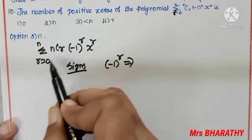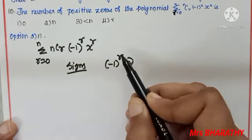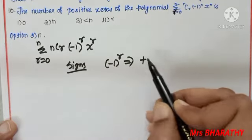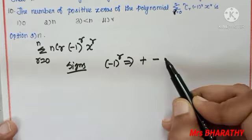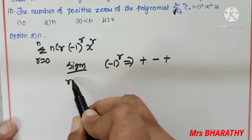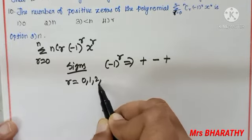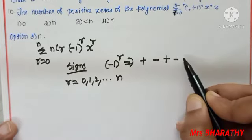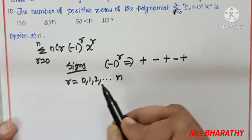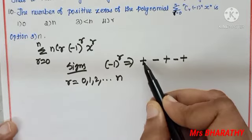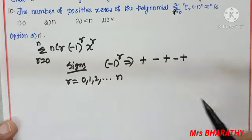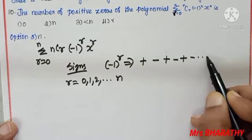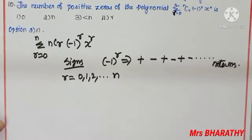When r = 0: (-1)⁰ = positive. When r = 1: (-1)¹ = negative. When r = 2: (-1)² = positive. And so on — the signs alternate +, -, +, -, ... up to r = n. Even powers give positive, odd powers give negative.